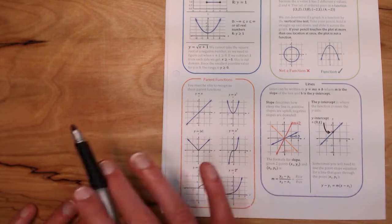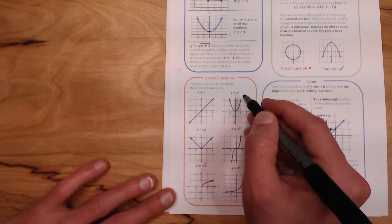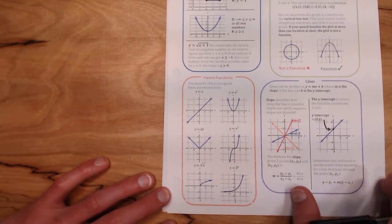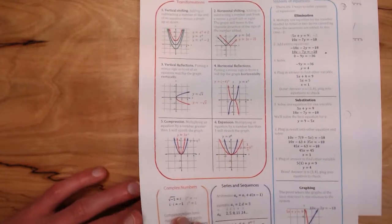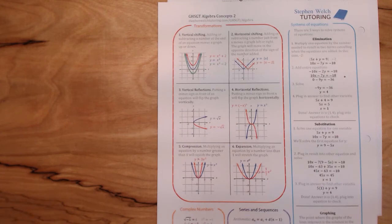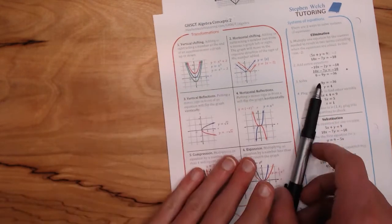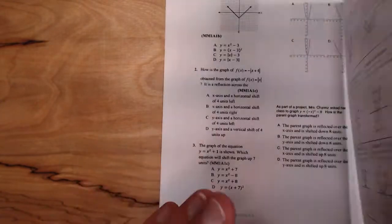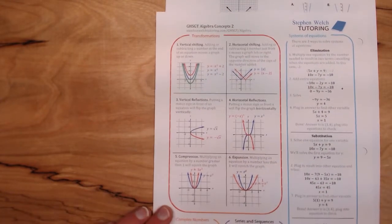I'm not worried about the names very much, but I am worried about you knowing the picture and the formula. You need to know all six of these. On the back is part two of the story, which is transformations. There are six different things we can do to any of the six parent functions, and they're all valid and fair game on your graduation test.